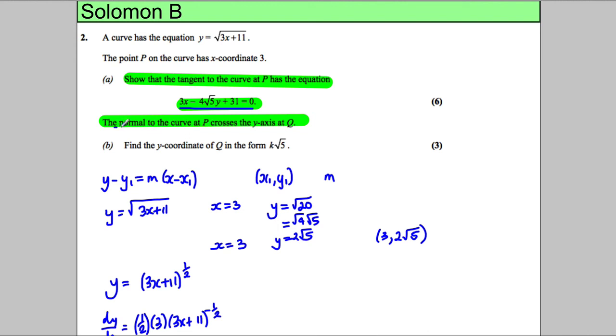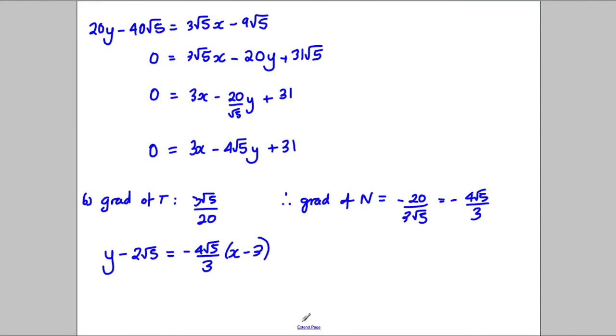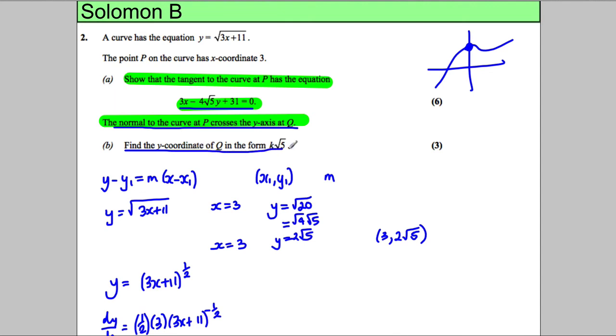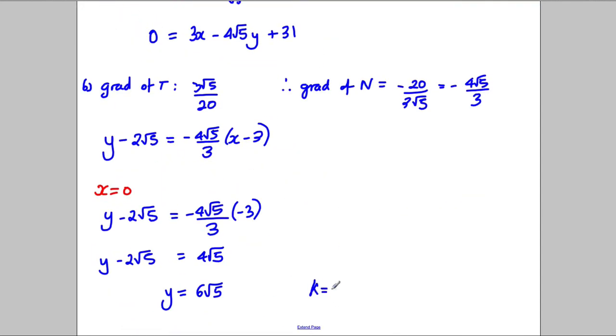Now it asks you, it says, the normal to the curve crosses the y-axis, so let's just think something that crosses the y-axis, something that crosses the y-axis is when x is 0, so what we can do, to find the y value, we set x to be 0, so x equals 0. So therefore, we'd have y subtract 2√5 equals negative 4√5 over 3, 0 take away negative 3, just be negative 3. So therefore, y subtract 2√5 equals, these two multiply together, the negative multiply by negative gives me a positive, and you've got to divide by 3, multiply by 3, so they cancel each other, you get 4√5, and adding the 2√5 to both sides, you would get that y equals 6√5. And it says, give your answer, the y-coordinate in the form k root 5, so therefore, in this case, k is going to equal 6, and we're done.